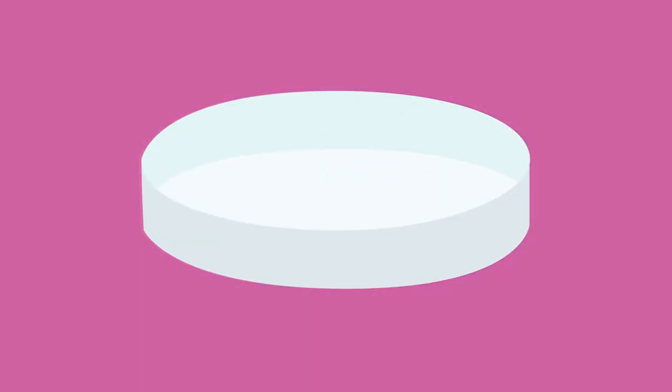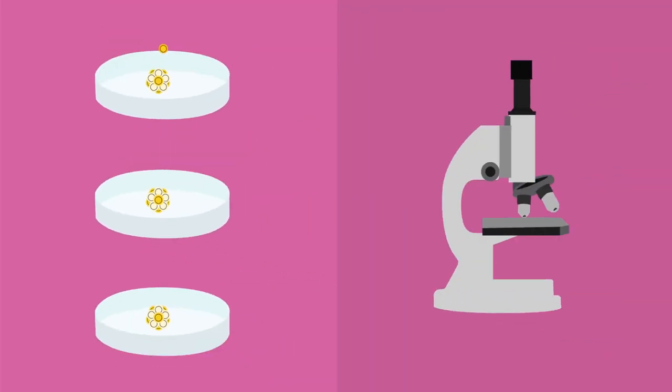IVF is where eggs and sperm are mixed in a dish in a lab outside of the body. Each fertilized egg would be left to grow until it reaches a few cells big, and then one cell from each embryo is removed and its genes tested to see if it has a genetic disorder.